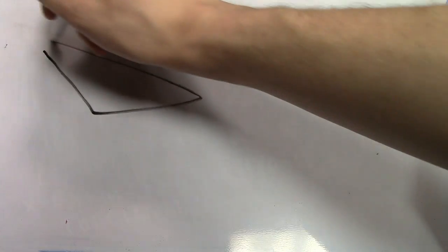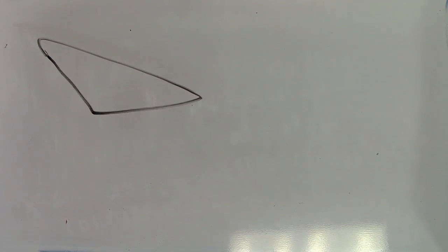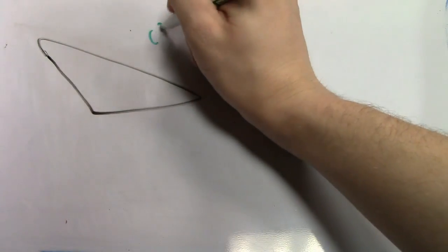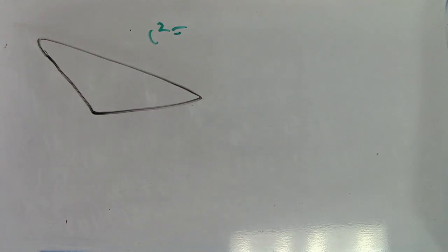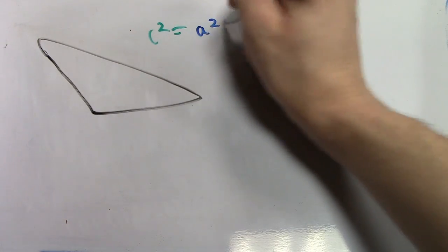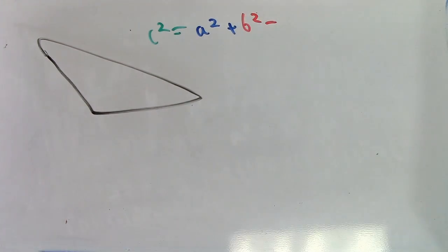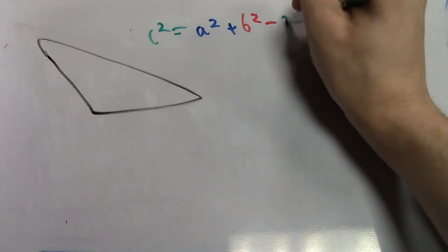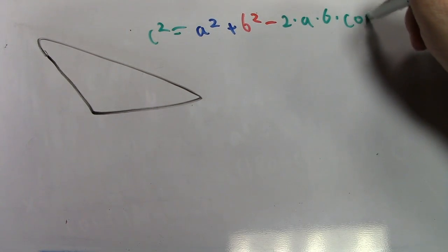Using another triangle, which is obtuse in this case, we will look at Law of Cosines. Law of Cosines states that C squared is equal to A squared plus B squared minus 2 times A times B times the cosine of angle C.